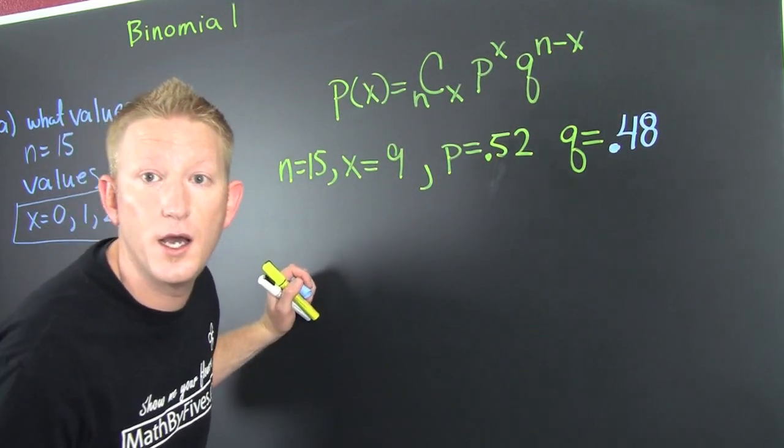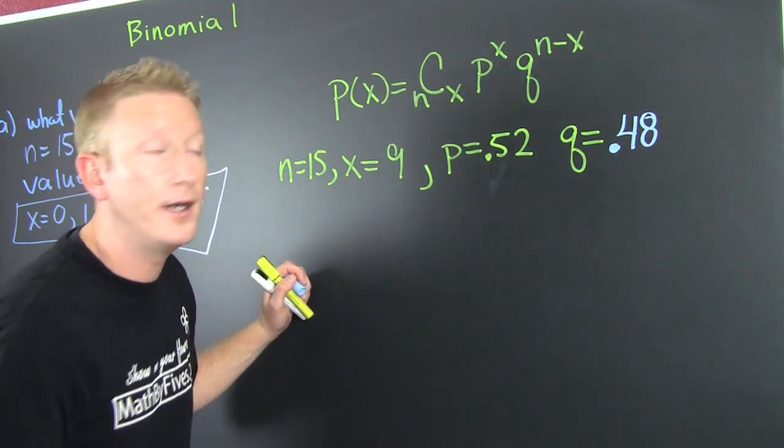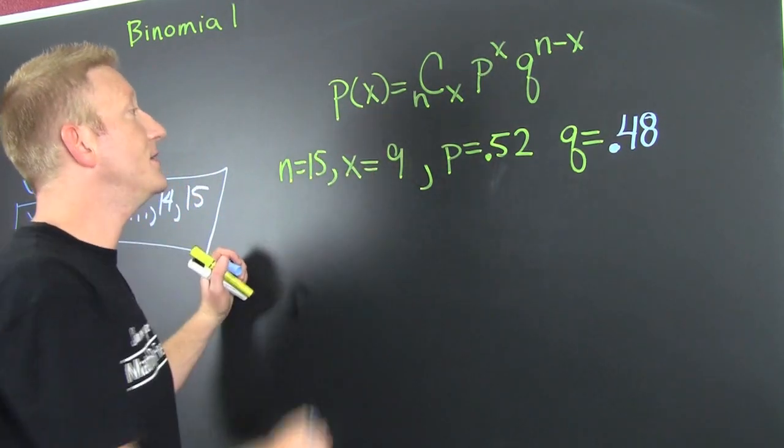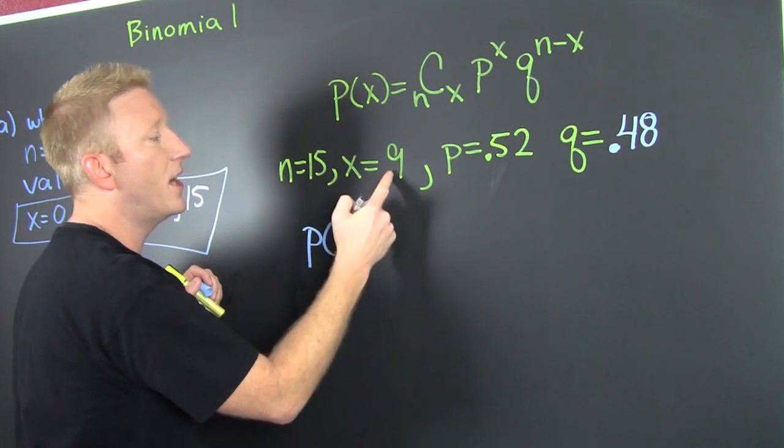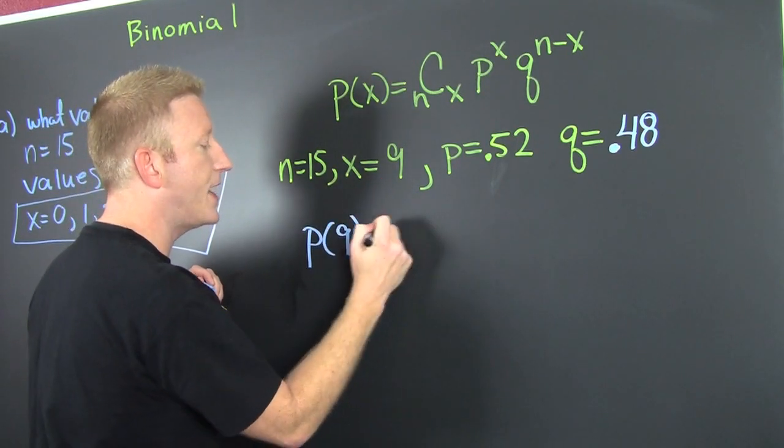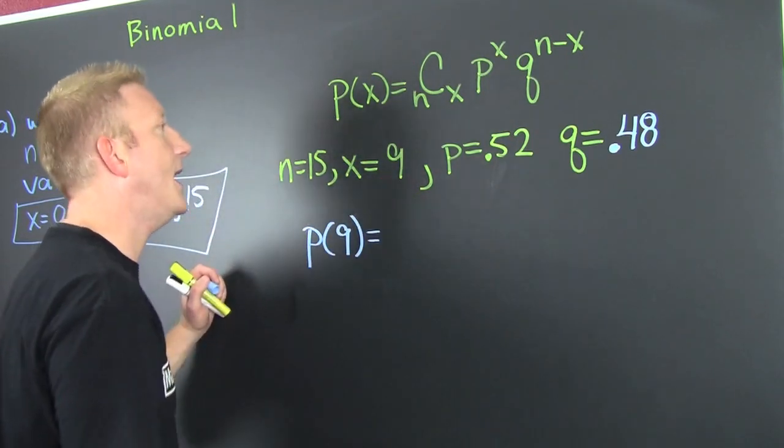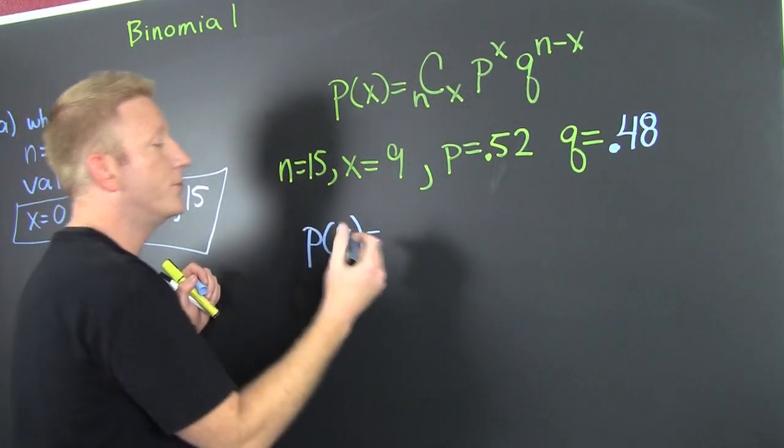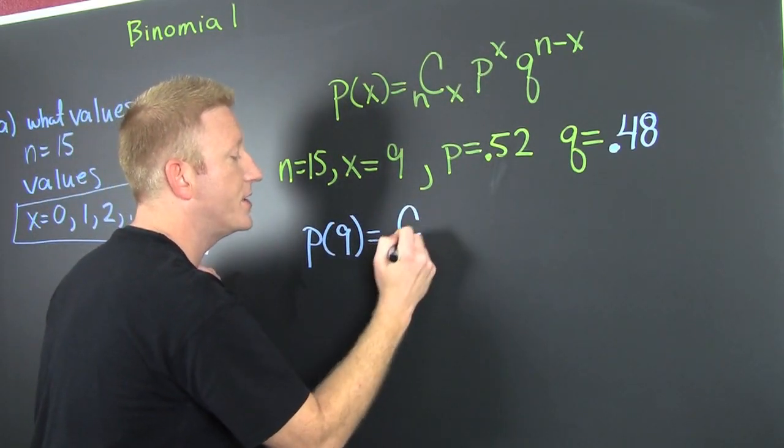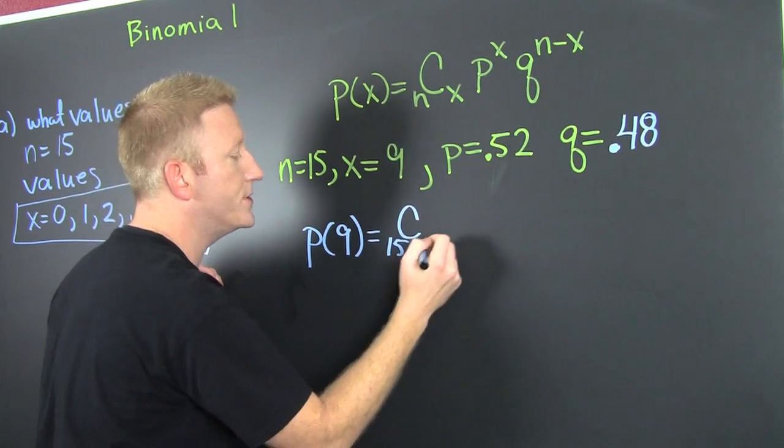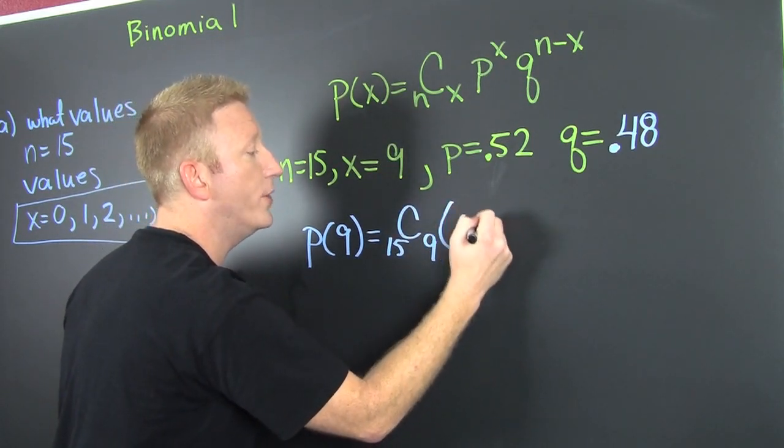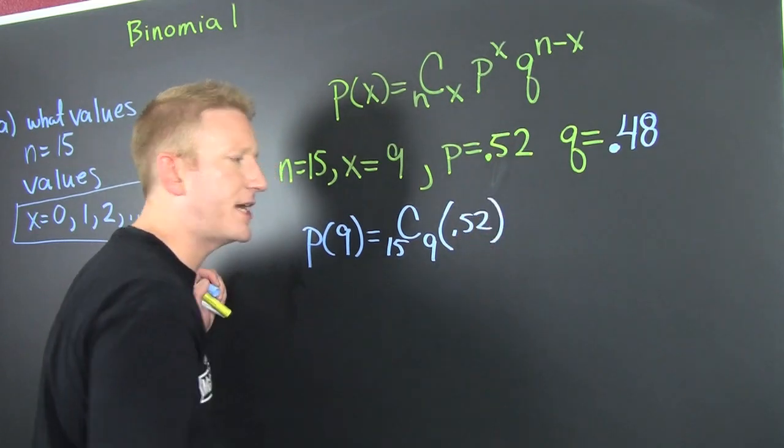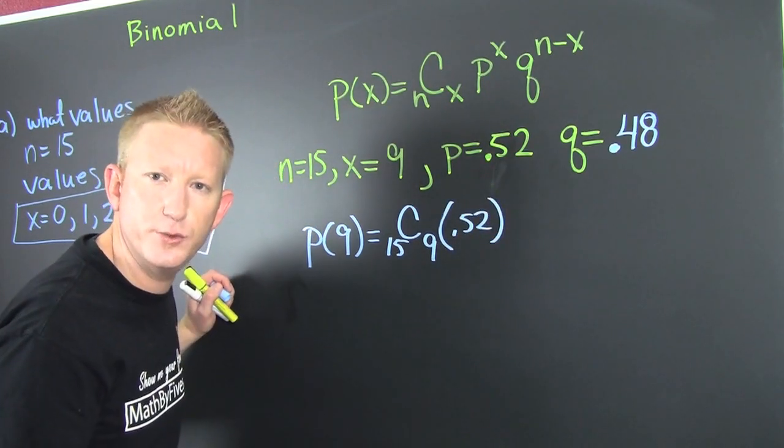Now we're going to plug it in. This is the probability of exactly nine people having an account. That's the combination of 15 choose 9. And then this is 0.52. How many successes are you looking for? Nine successes.